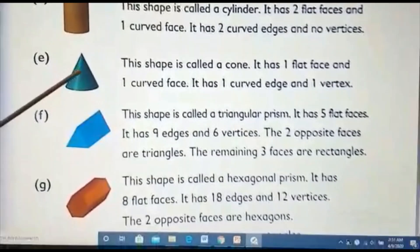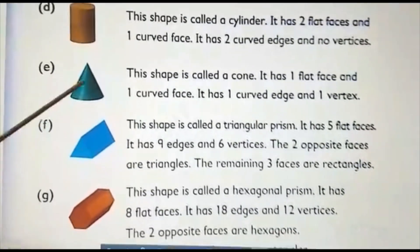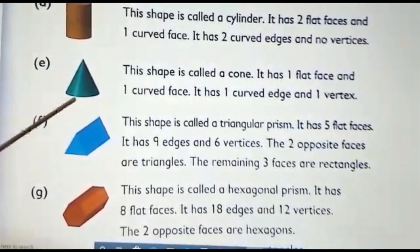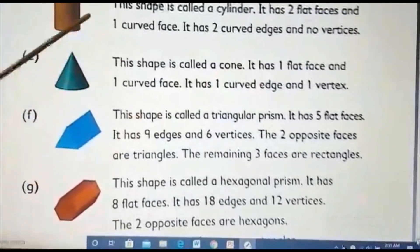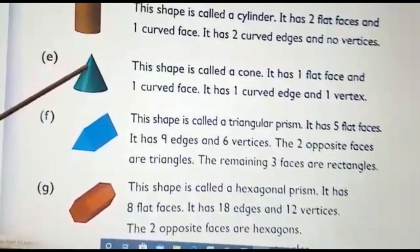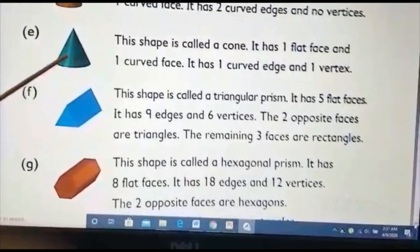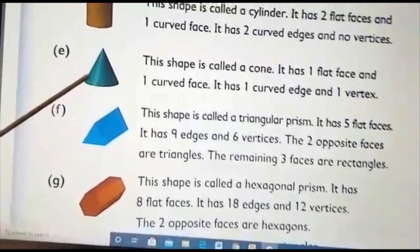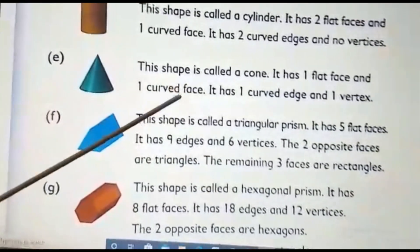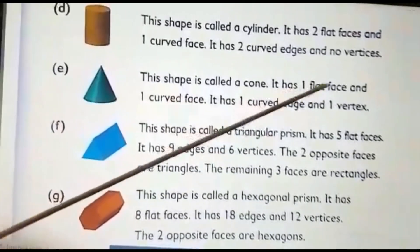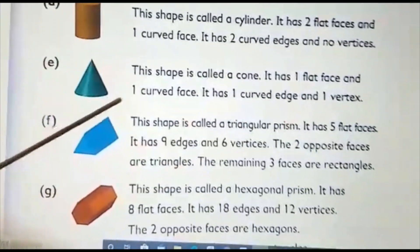The next shape is a cone — just like a birthday cap. A cone has one curved face and one flat face at the bottom. It has one curved edge and one vertex at the pointed top.